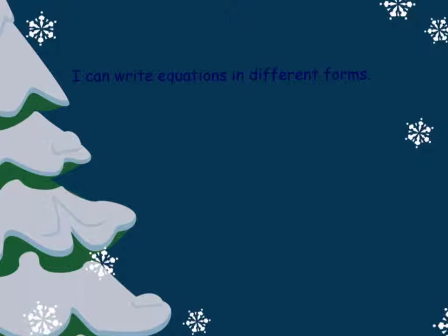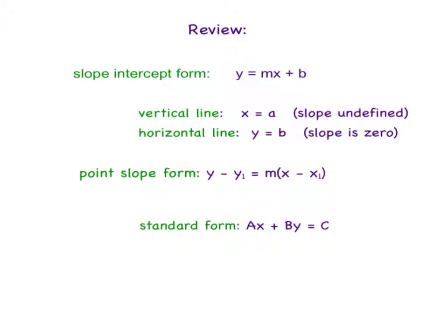This presentation is just a quick review of writing equations in different forms. So the forms of linear equations that we know so far are slope-intercept form, y equals mx plus b, where m and b will be numbers, x and y stay x and y, m is the slope, b is the y-intercept.